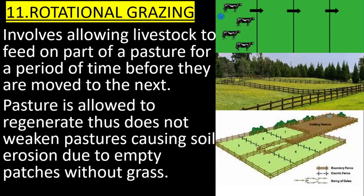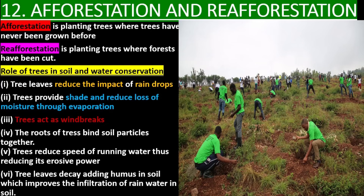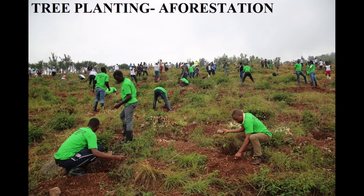Rotational grazing involves allowing livestock to feed on part of a pasture for a period of time before being moved to the next pasture, allowing it to regenerate. This does not weaken pastures or cause soil erosion due to empty patches without grass. Afforestation is planting trees where trees have never been grown before; reforestation is planting trees where forests have been cut.